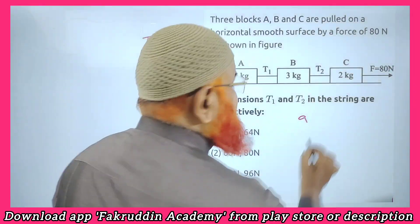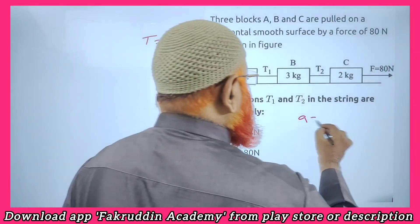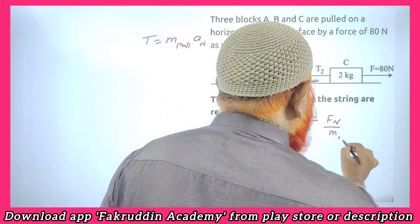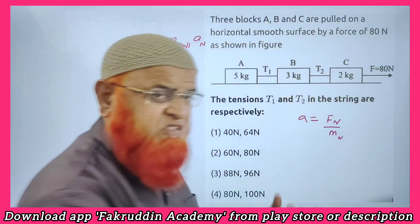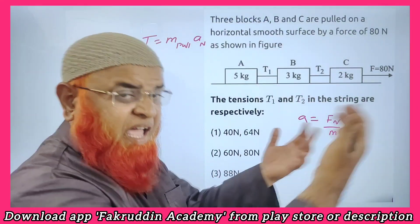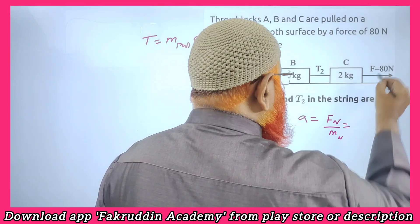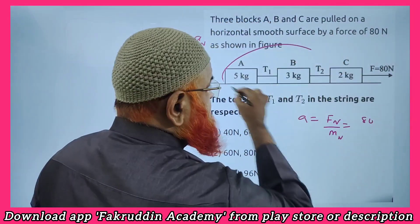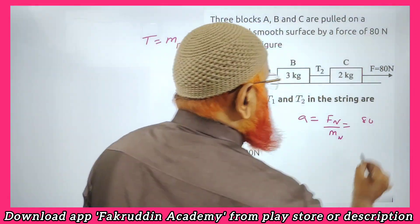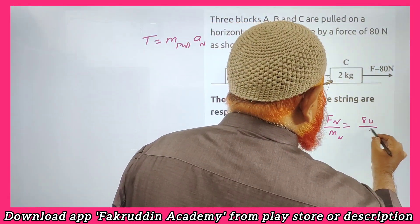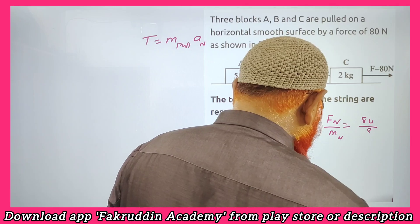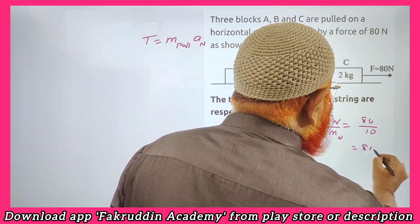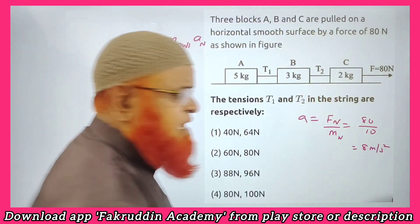Acceleration is nothing but net force by net mass, because F equals MA, so A equals F by M. Net force is 80N. Net masses, if you add, it is going to become 10. So your net acceleration is 8 meters per second squared.